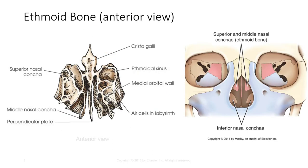The ethmoid bone consists of a horizontal plate, a vertical plate, and two light spongy masses called labyrinths. The ethmoid is located between the orbits and forms part of the anterior cranial fossa, the nasal cavity, orbital walls, and the bony nasal septum.